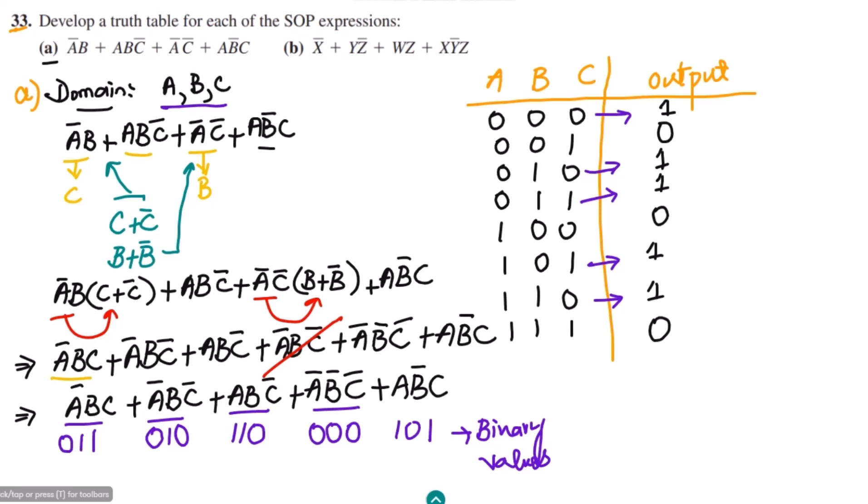This is the truth table we developed for part A. The condition was to first convert the SOP expression to standard form, find the binary values, and then develop the truth table. In our upcoming video we will solve part B of this question using the same steps. Till then take care of yourself and I will see you soon.